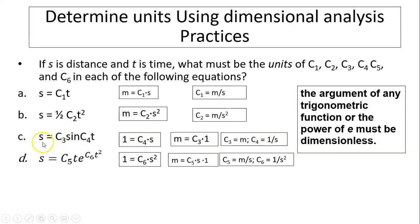Similarly, E to the power of C6 T squared must be dimensionless. If dimensionless, it's just 1. So C6 times T squared has to be 1. Time is seconds, so C6 has to be 1 over seconds squared. And S equals C5 times T times 1. T is seconds, so C5 is meters over seconds. That's it.